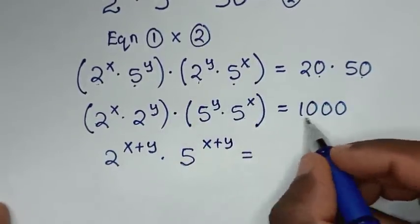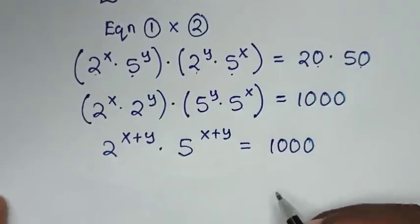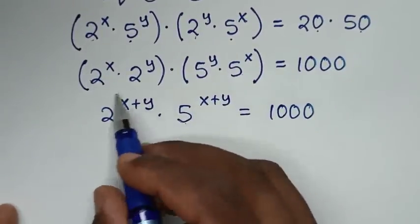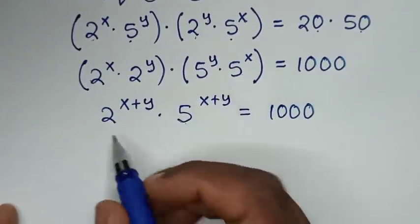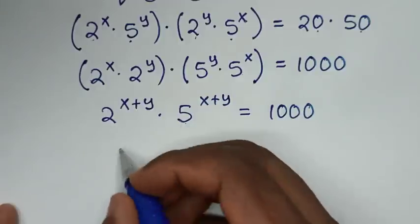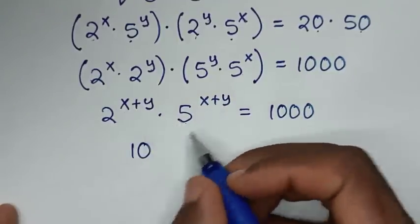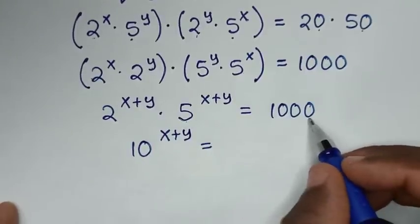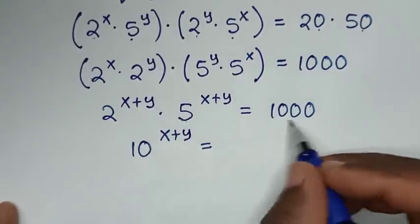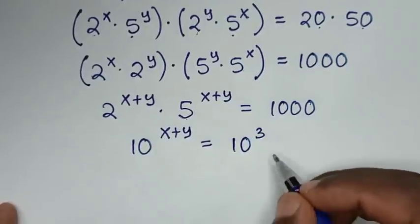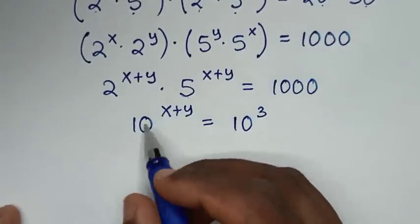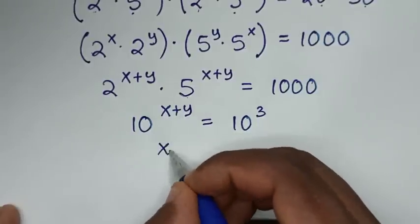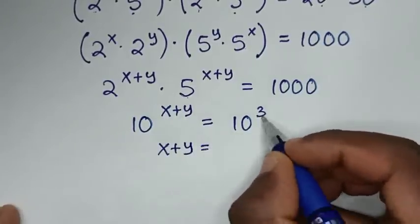Multiplying the two factors with the same power of (x plus y), we get (2 times 5) power of (x plus y), which is 10 power of (x plus y), equal to 1,000. Since 1,000 is 10 power of 3, and we have the same base of 10, we compare the powers: x plus y equals 3. This is equation 3.